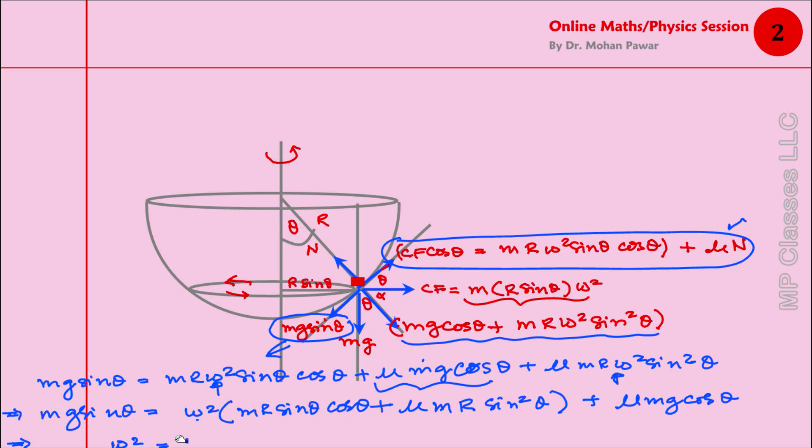If we solve this for ω², then ω² equals—I am going to go up here and write: ω² equals mg sin θ, that is going to be on the top, and then this term is going to be subtracted by transposing it to that side. mg sin θ minus μmg cos θ, and then this whole term mR. Let us now take some quantities outside. mR sin θ is certainly common, so what you get is: mR sin θ times (cos θ plus μ sin θ).